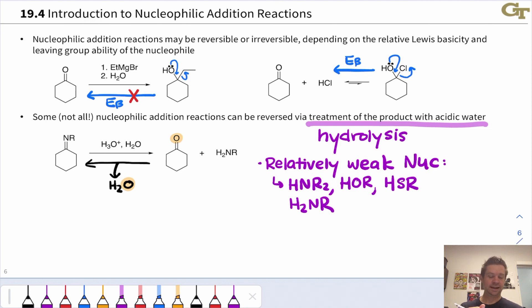For now, the thing to notice is that water is a byproduct from right to left. If we use an excess of water together with an acid catalyst—and the acid catalyst, by the way, is also needed for the reverse direction—we can get the nucleophile back and the carbonyl compound back. So it's possible to hydrolyze these products of reaction of weak nucleophiles with ketones and aldehydes back to the carbonyl compound and the nucleophile, which is pretty nice.